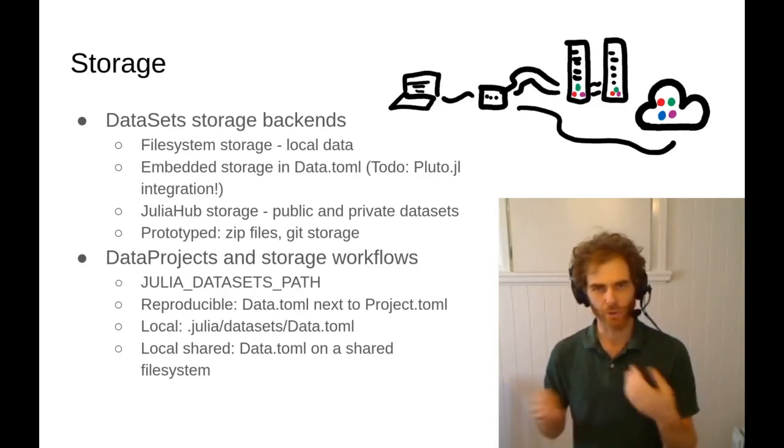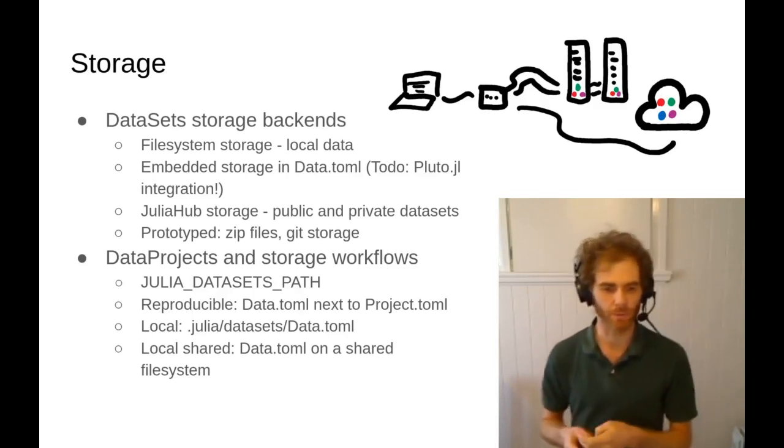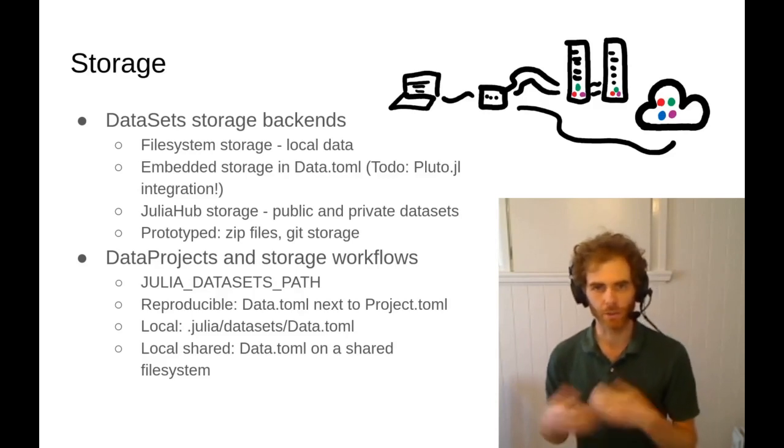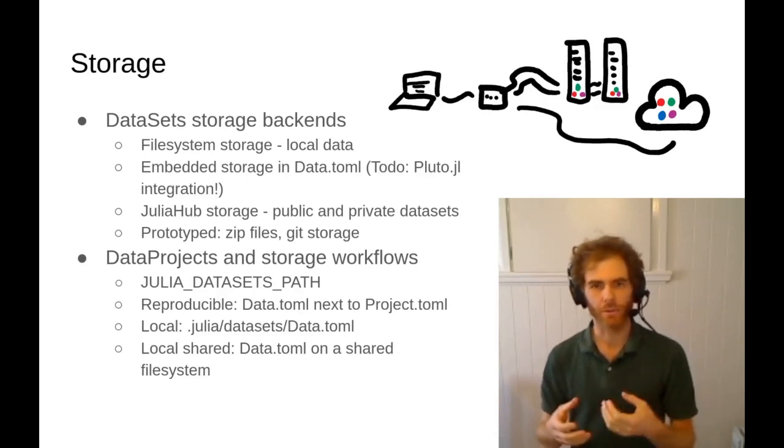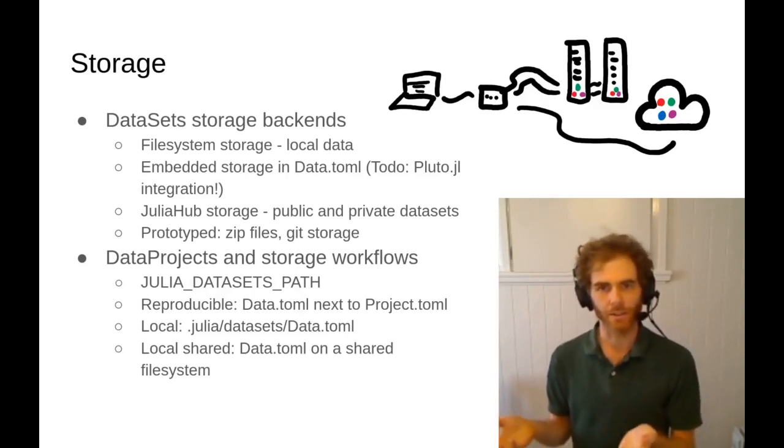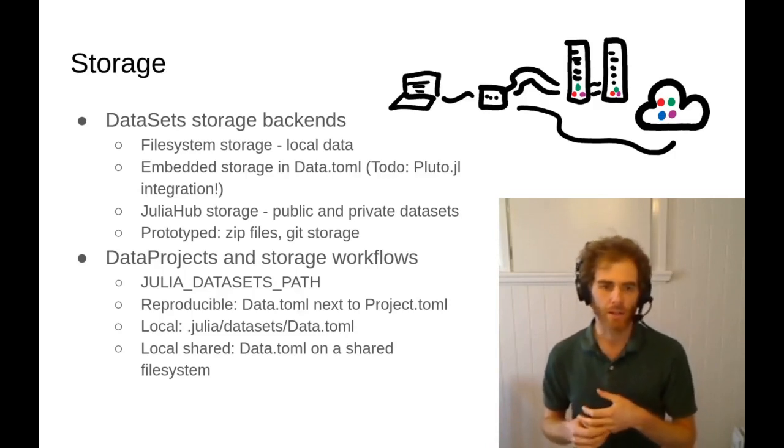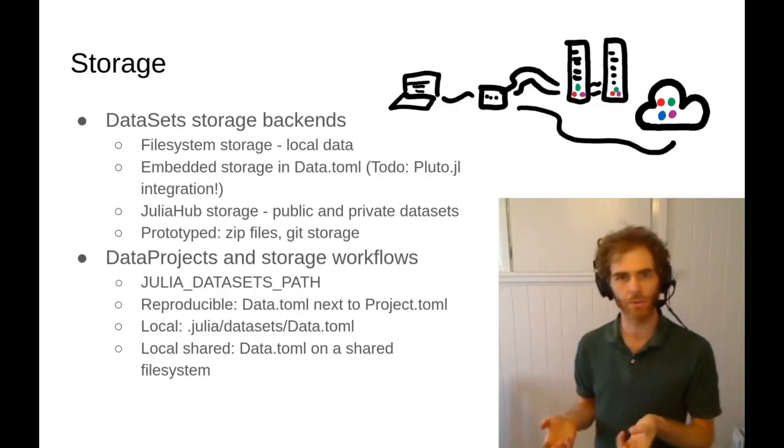There's several different storage workflows that you might want to consider. People talk a lot about reproducibility, so you might want to have your Data.toml next to your project and have it automatically loaded. JuliaDatasetsPath is an environment variable which you can set to search for your data projects in a configurable way. That can be set to have a reproducible workflow, but that's not always what you want.